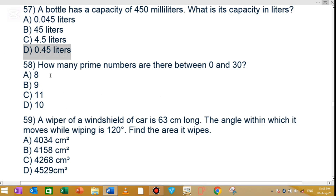MCQ number 58: How many prime numbers are there between 0 and 30? The prime numbers are 2, 3, 5, 7, 11, 13, 17, 19, 23, and 29. So there are 10 prime numbers.